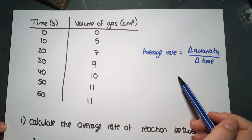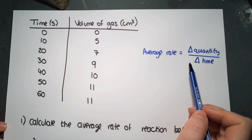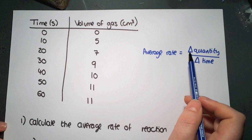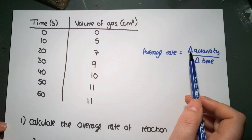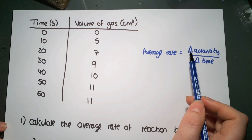You'll find this equation in the front of your data book. Average rate equals delta quantity divided by delta time. Delta means change in quantity, so that quantity could be a volume, it could be a mass, it could be a concentration.